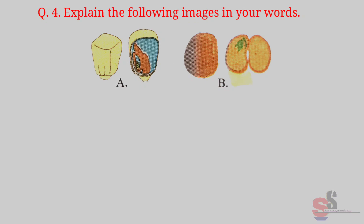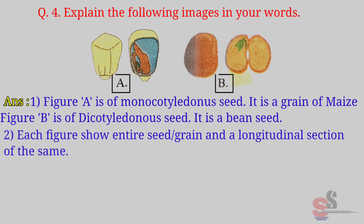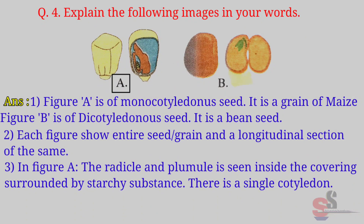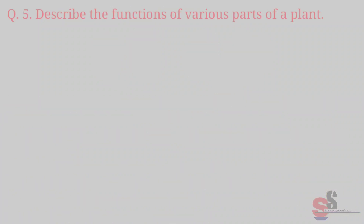Question 4: Explain the following images in your own words. Answer: Figure A is a monocotyledonous seed — it is a grain of maize. Figure B is a dicotyledonous seed — it is a bean seed. Each figure shows the entire seed or grain and a longitudinal section of the same. In Figure A, the radicle and plumule are seen inside the covering surrounded by starchy substance, with a single cotyledon. In Figure B, the radicle and plumule are seen on the upper side of the cotyledon, with two cotyledons.